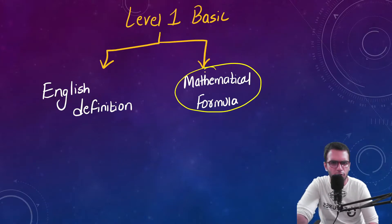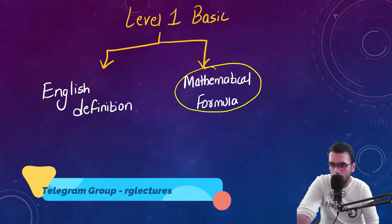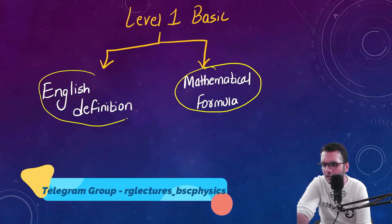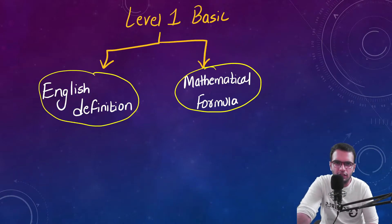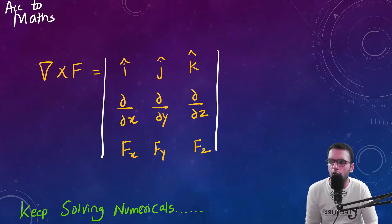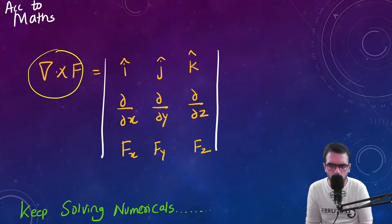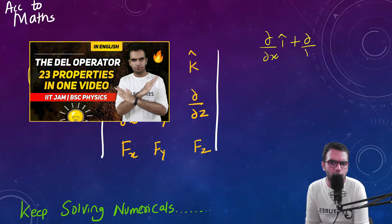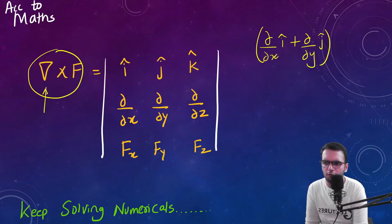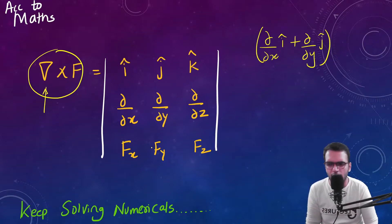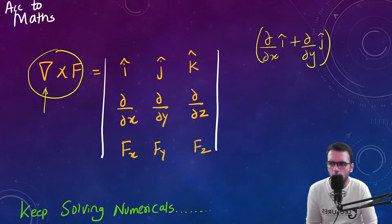First is the basic level. Basically we can define curl in two ways: one is by mathematical formula, as most mathematicians define curl, and the second way is by English definition, which is the geometric approach. So what is curl according to maths? According to maths, curl is a cross product of two things, one of which is the del operator. And F is a vector-valued function: F = Fx·î + Fy·ĵ + Fz·k̂. The answer of the cross product is defined as the curl.